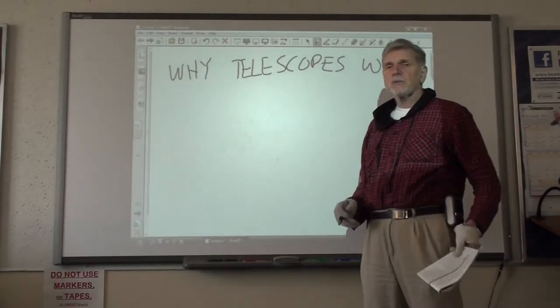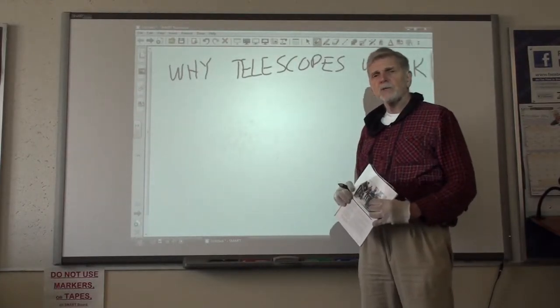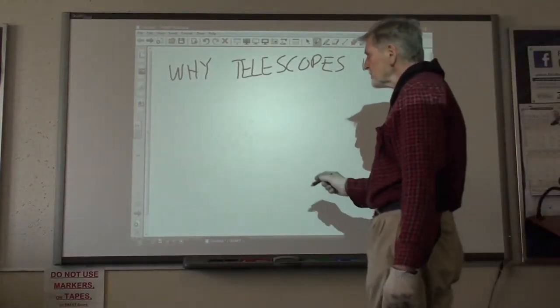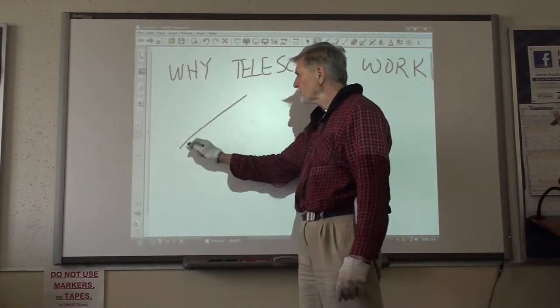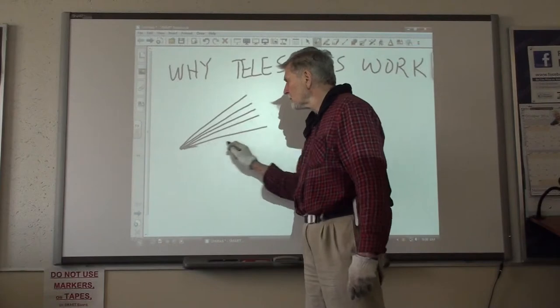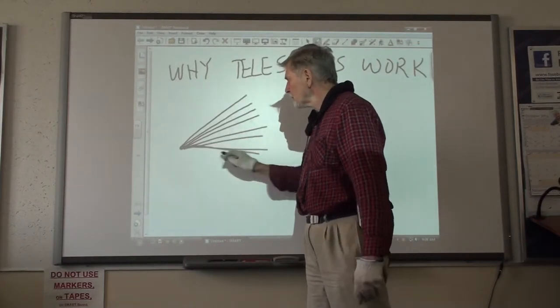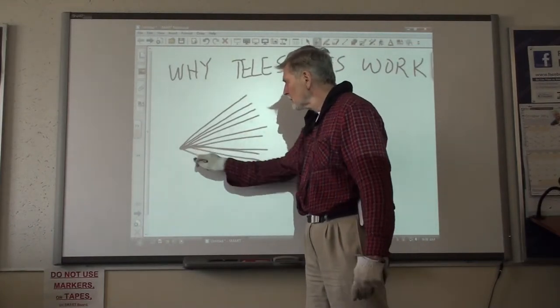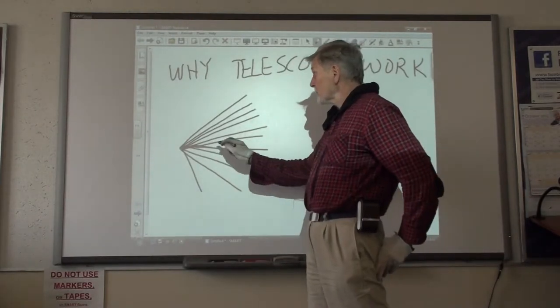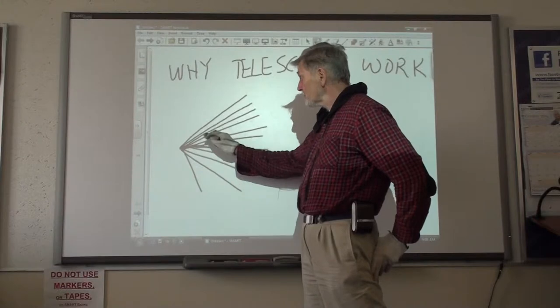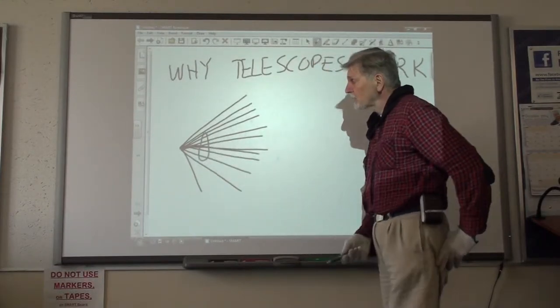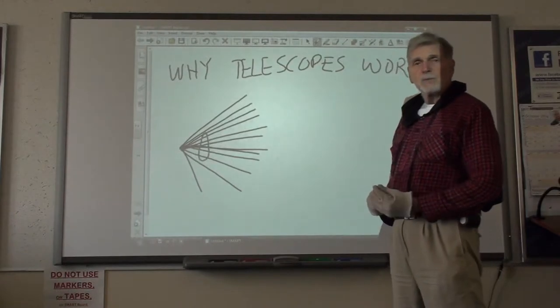So the reason that this is true is because of the size of your eye. If this is a source of light, then it is emitting light rays in all directions. And inside of your eye is a lens.